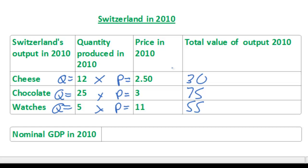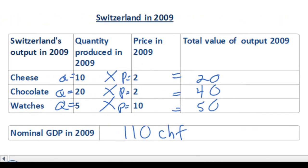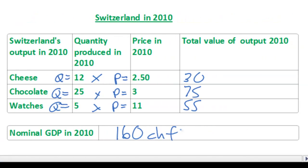If we add up the total market value of Switzerland's output in 2010, we see that Switzerland's nominal GDP would be one hundred and sixty Swiss francs. That's quite an increase from one hundred and ten Swiss francs in 2009 to one hundred and sixty Swiss francs in 2010. Looking at these numbers alone, we might conclude that Switzerland's GDP increased dramatically — by approximately forty-five to fifty percent. However, this rate of growth overstates the true increase in the amount of goods and services produced in Switzerland, because much of the increase in nominal GDP is accounted for by the higher prices for Swiss goods in 2010 compared to 2009.